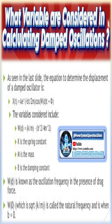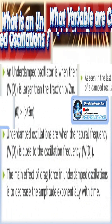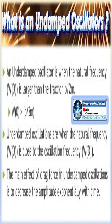The main difference between damped and undamped oscillations is that in damped oscillations the amplitude gradually decreases over time, while in undamped oscillations the amplitude does not change.